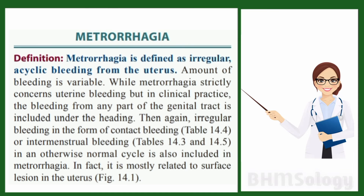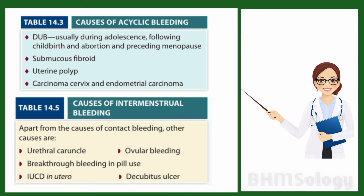Other causes of metrorrhagia include intermenstrual bleeding, matlab in between menses bleeding ho rahi ho. Aisay kin condition mein ho saktay hain, jaisay DUB that is dysfunctional uterine bleeding, usually during adolescence, following childbirth and abortion, and preceding menopause.